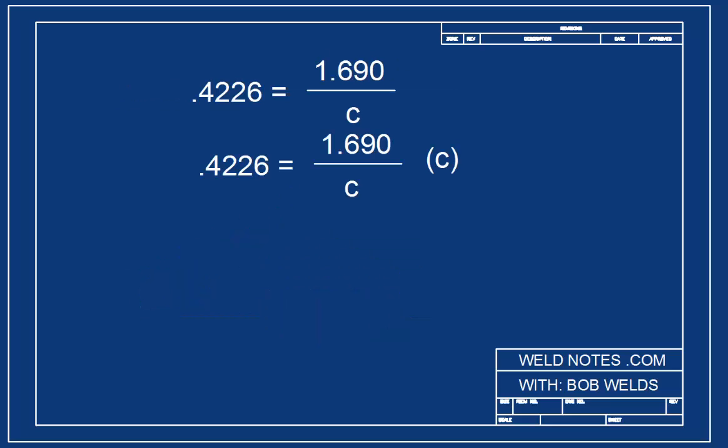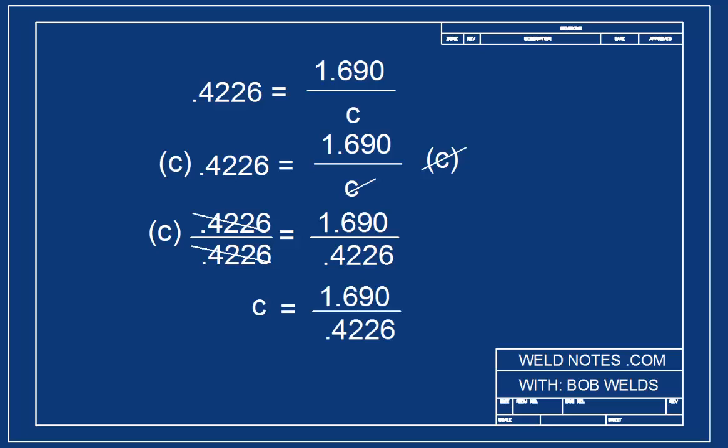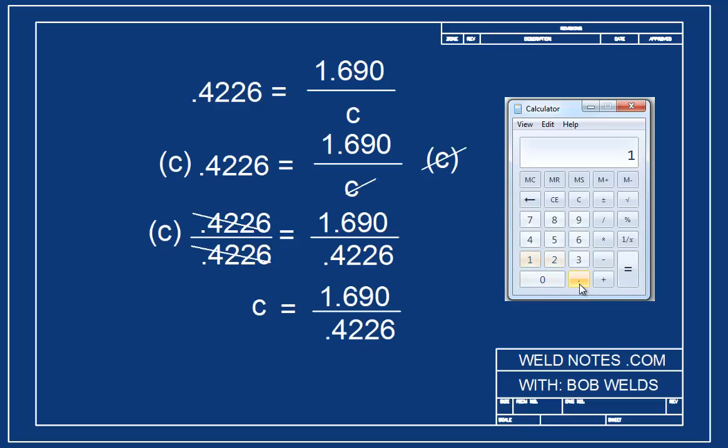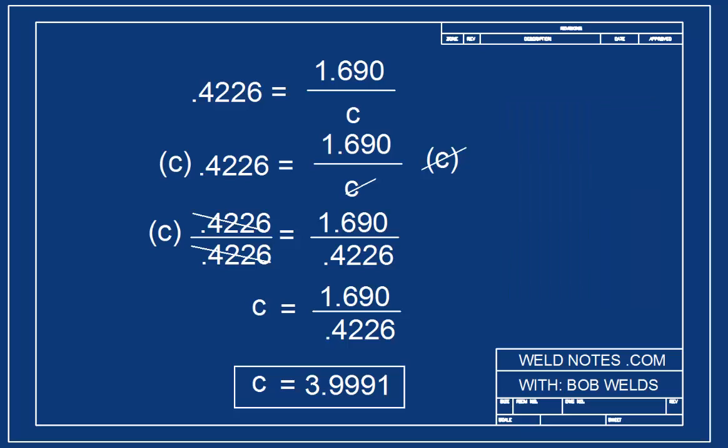I'll multiply both sides by C. The C's cancel out on the right. And now I'll divide both sides by .4226. This leaves C on the left, and a little division problem on the right. We use our calculator to type 1.69 divided by .4226. And we get something just a smidgen over 3.99, a number very close to 4 meters.